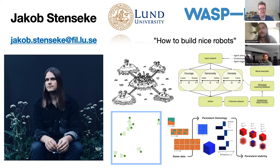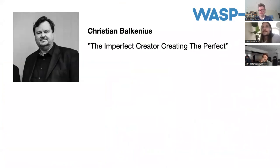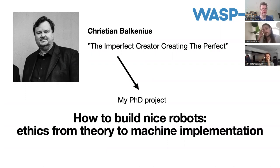I'll tell you a bit about myself. I'm Jakob, a PhD student in moral philosophy — practical philosophy, it's called — at Lund University. I have a broad project called 'How to Build Nice Robots.' I have a supervisor who got WASP-HS money to look into the idea that maybe we can create machines that are nicer or more moral. This has led to my PhD project, where I'm trying to respond to this idea that you can create something like a perfect thing. I'll spoil it already: it's hard to make something perfect.